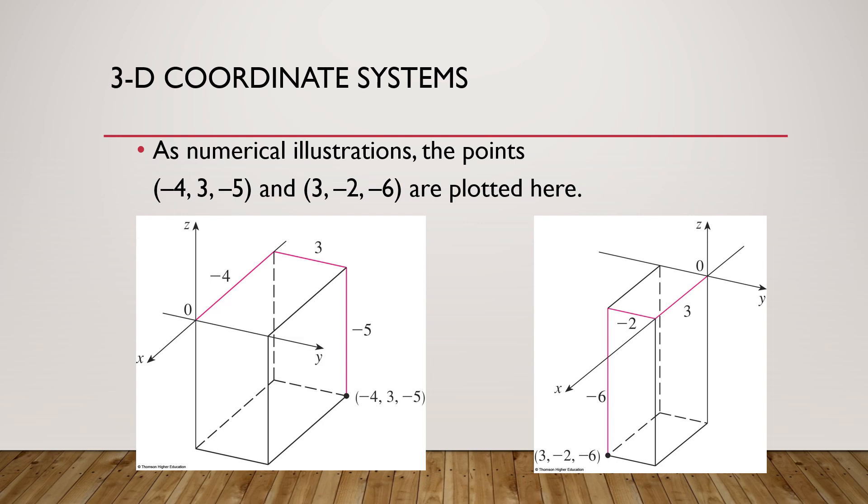And then, from there, we got 3 positive units towards the y-axis, and then, 5 negative units towards the z-axis. So, we got our coordinates, minus 4, 3, and minus 5, downward, somewhere in the octant.